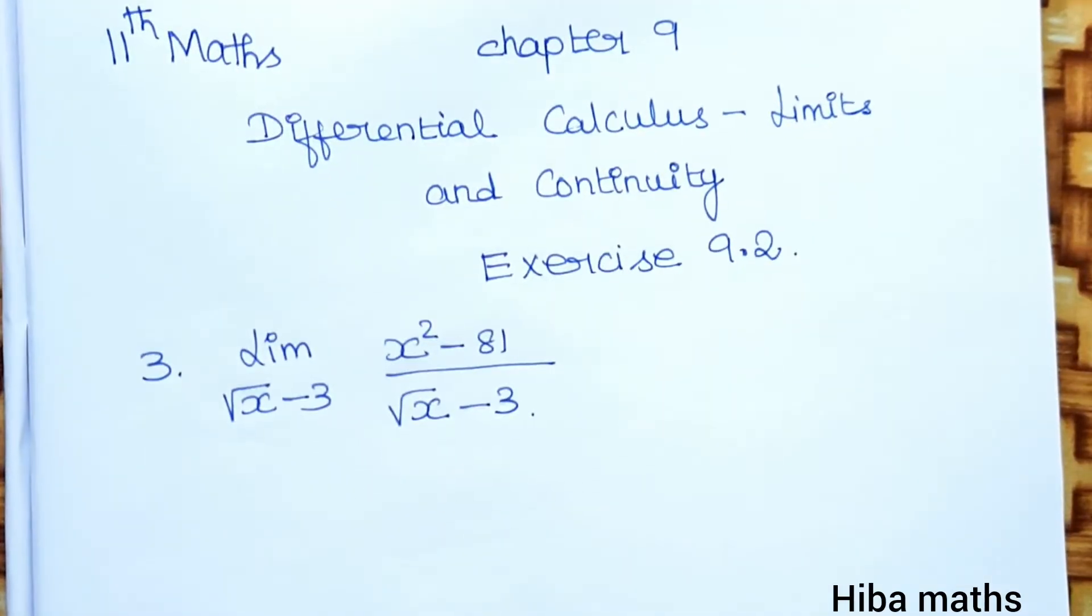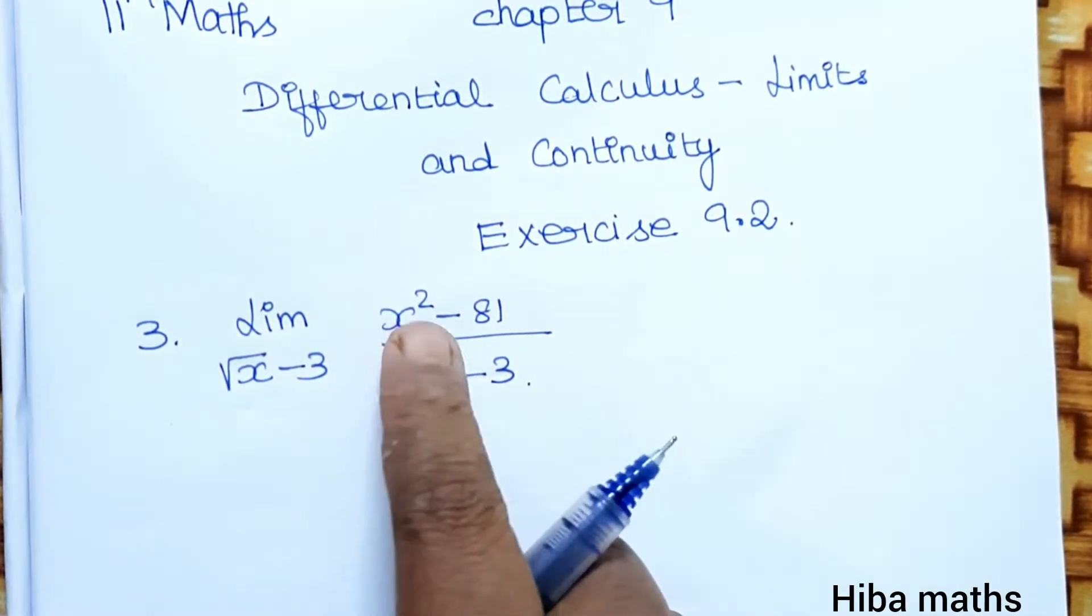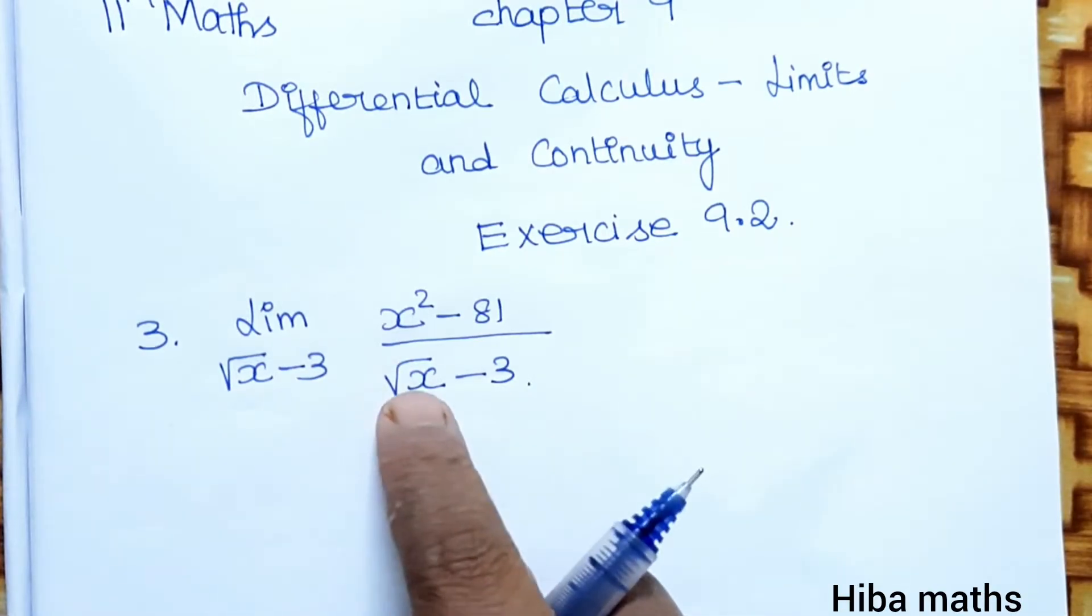Solve Plan A in the video. Limit root x minus 3: x square minus 81 divided by root x minus 3.